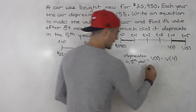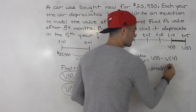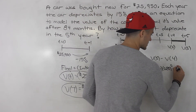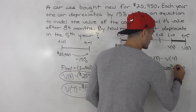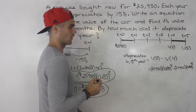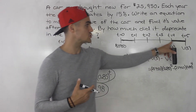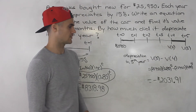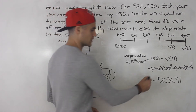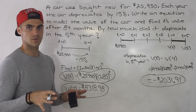We plug in t = 5 and t = 4: V(5) = 25,950 × (0.85)^5 and V(4) = 25,950 × (0.85)^4. Subtracting V(4) from V(5) gives the depreciation in the fifth year. When you calculate that, you get negative $2,031.91 — that's how much the car depreciated in the fifth year.